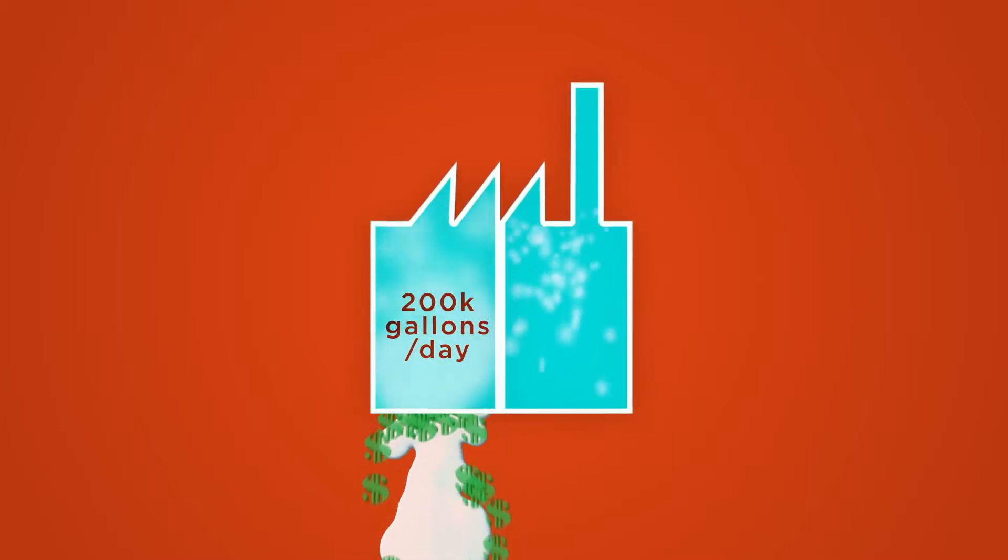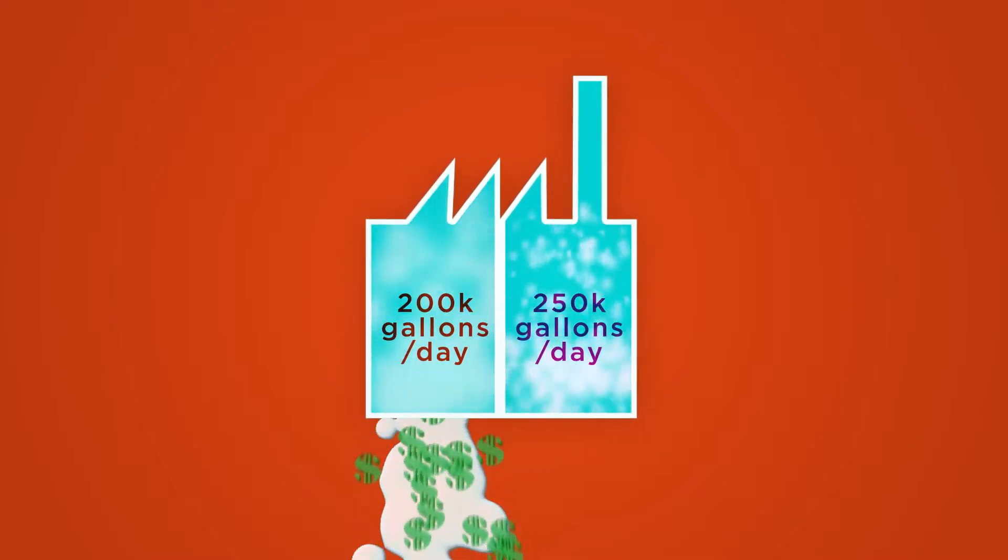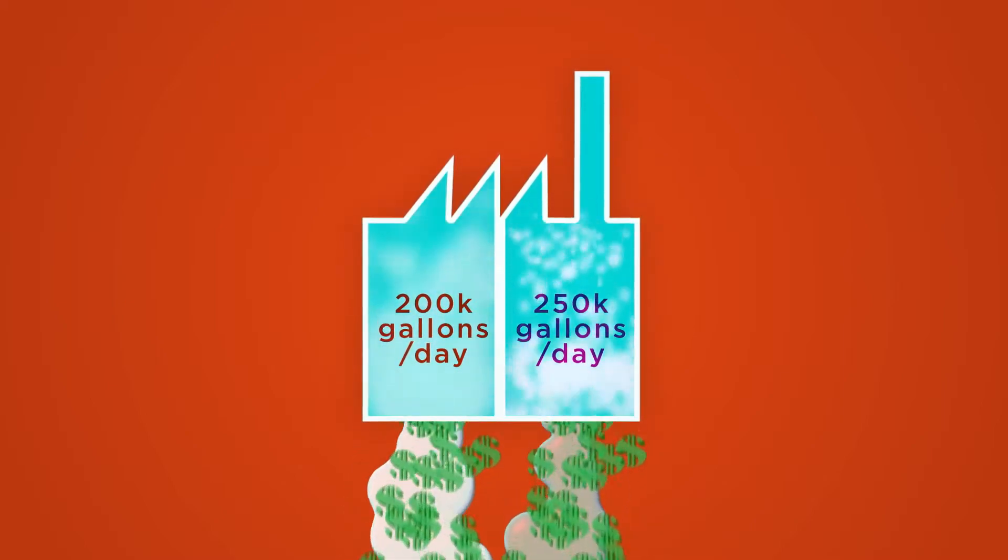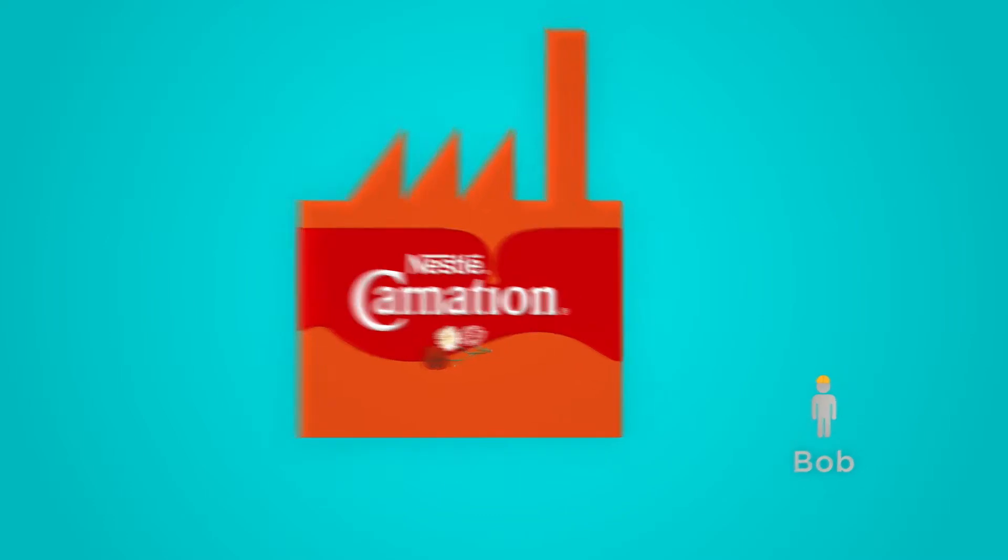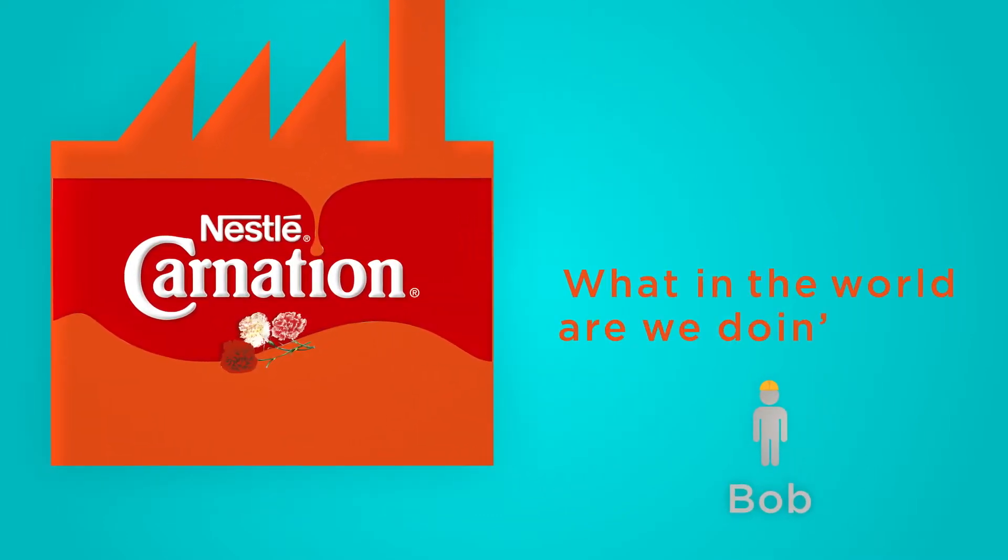At another part of the factory, they're paying to buy 250,000 gallons of water a day to run the factory. They're also paying to throw that away. In the middle of the drought, a guy named Bob Valdez, who is the chief engineer at the Carnation factory, said, what in the world are we doing here?